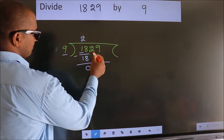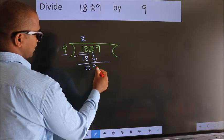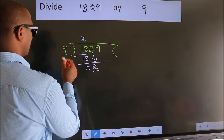After this, bring down the next number. So 2 down. Here we have 2, here 9.